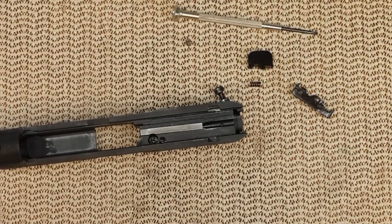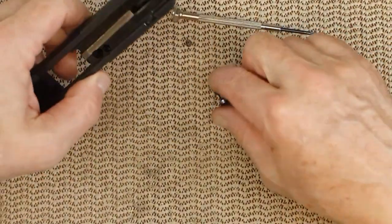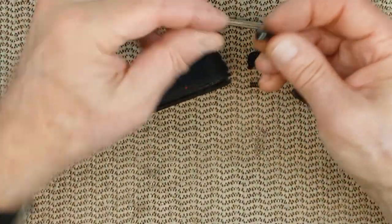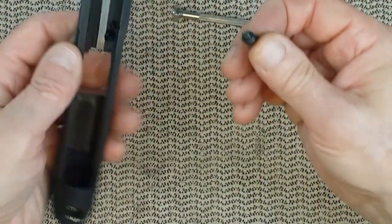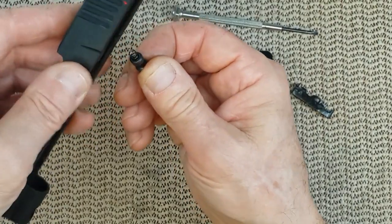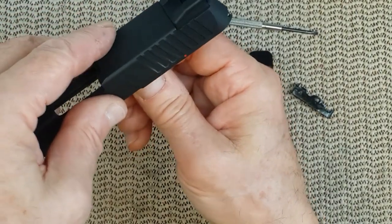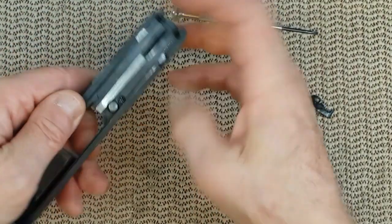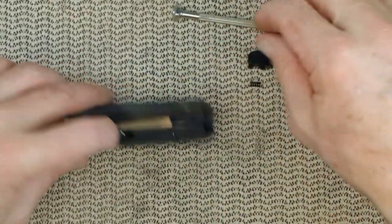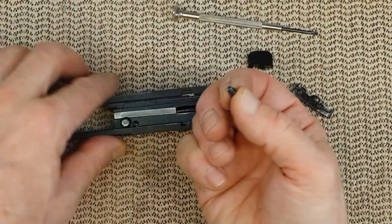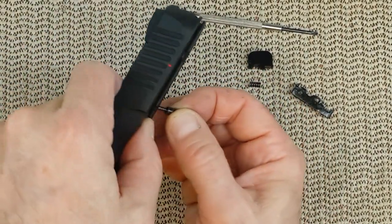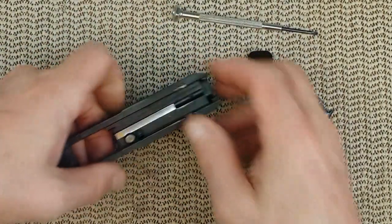Now it is time to reassemble the slide of the G3. We're going to do it in exactly the opposite way of how we did it to take it apart, but we have to slide those parts in the slide. So now we have the plunger here for the safety, and then we have the release button. There we go.